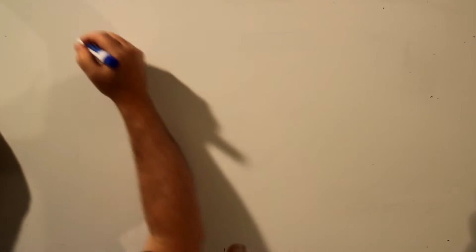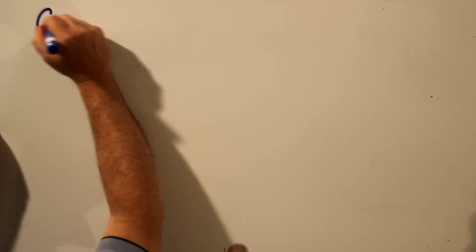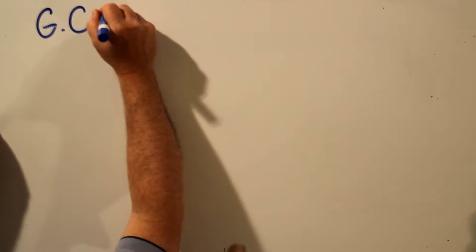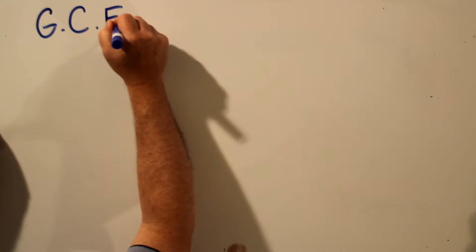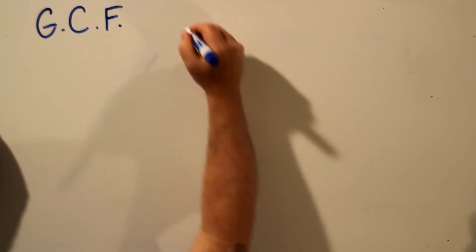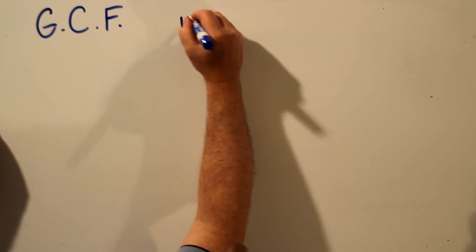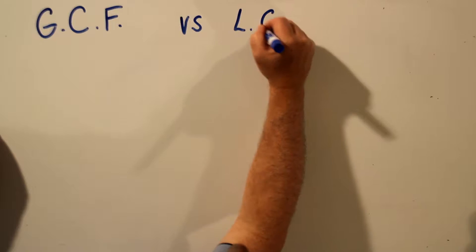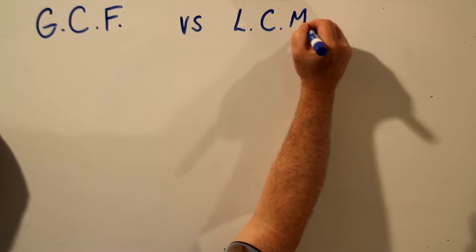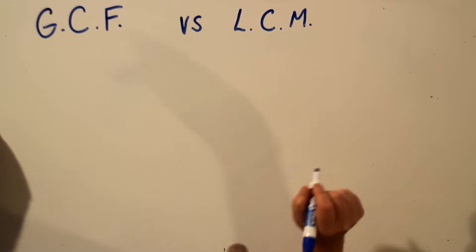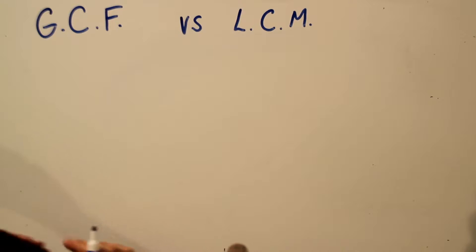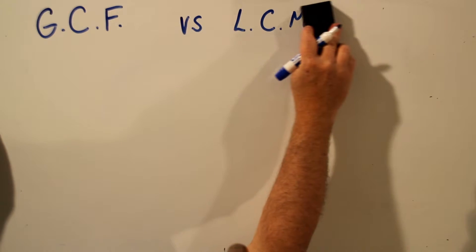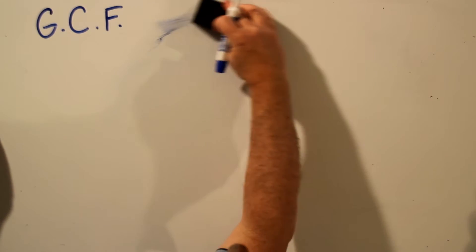In this lesson we're going to find the greatest common factor of two numbers. Greatest common factor is used when reducing fractions, and it's similar to the lowest common multiple. The lowest common multiple is used to find common denominators in fractions. So in this lesson we're going to be looking at greatest common factor.